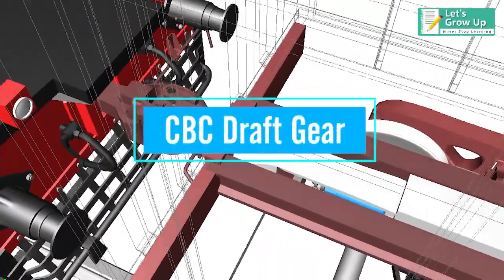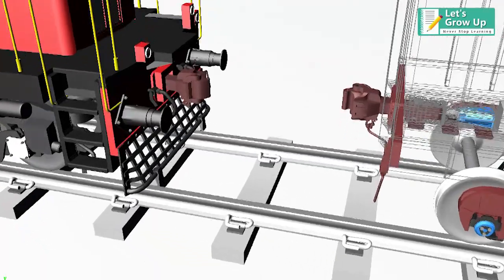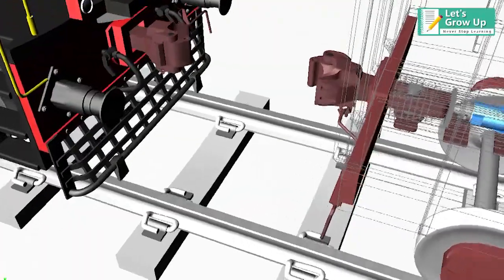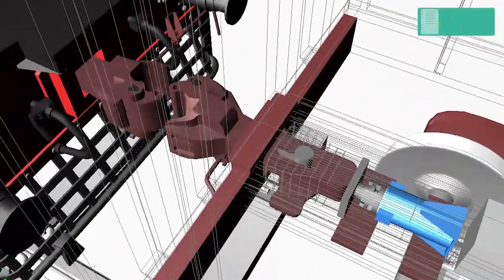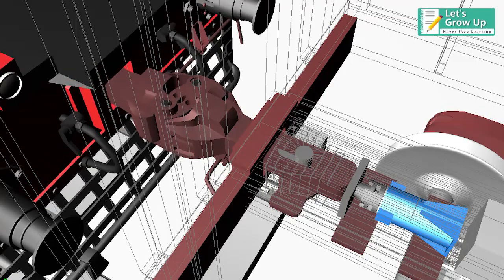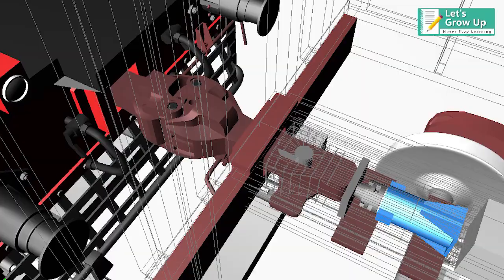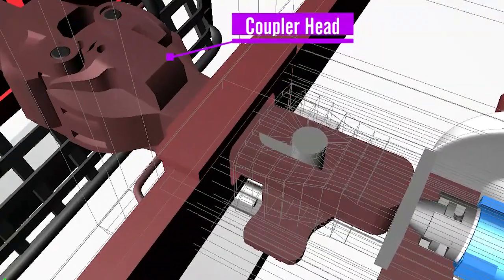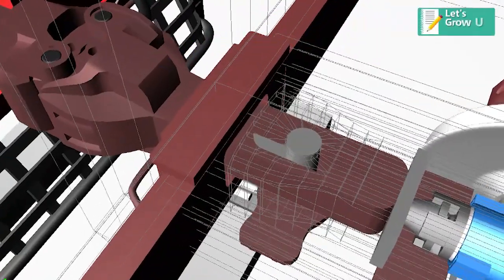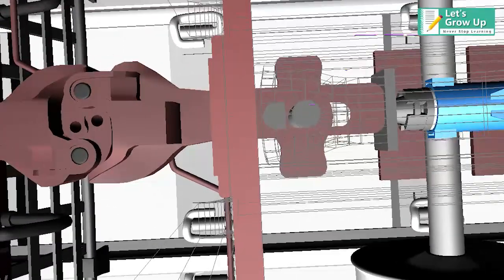The coupling action between wagons is automatic. The drawbar is cast together with the coupler head. The tail end of the drawbar is connected to draft gear through a central pin.